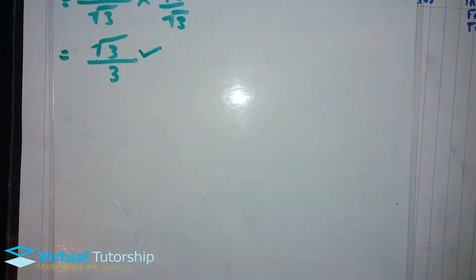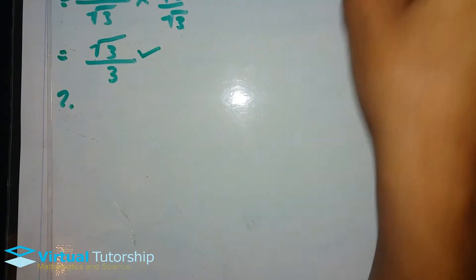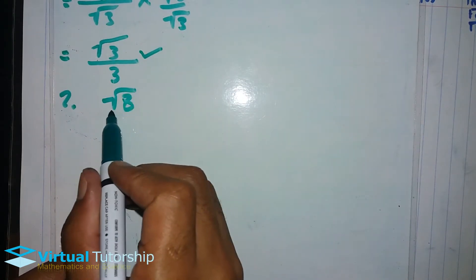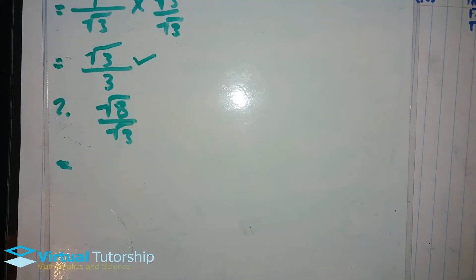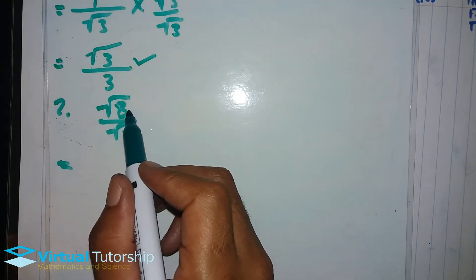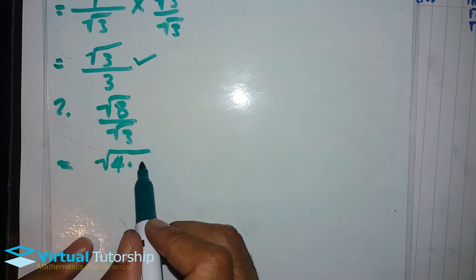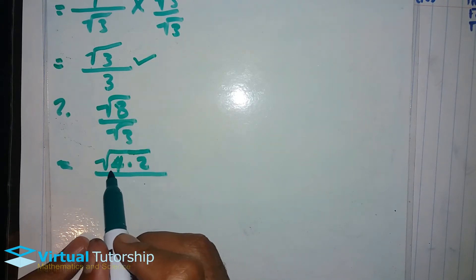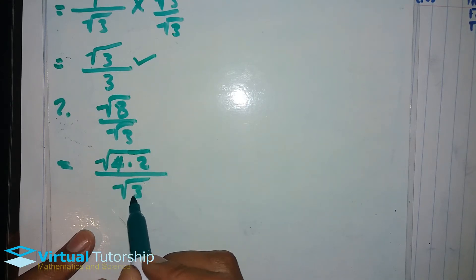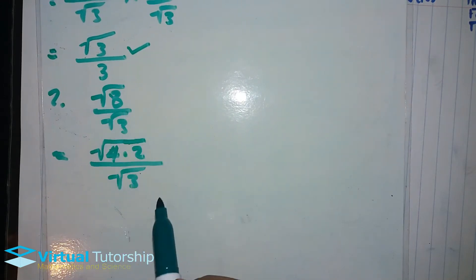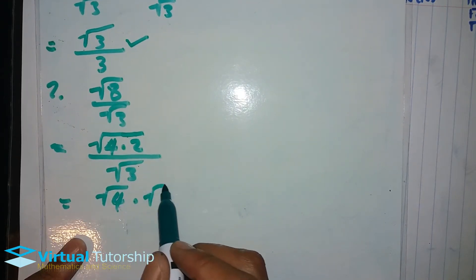Let's start another example. Square root 8 over square root 3. The base 8 is a non-prime number, so we break it as 4 times 2 — a product of a perfect square and a prime number. So it becomes square root 4 times square root 2, all over square root 3.